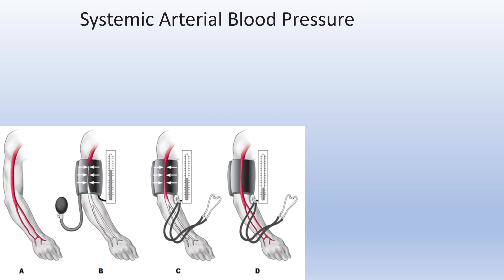When we take blood pressure at the brachial artery with the cuff on the arm, we are only taking the pressure of the systemic circuit, not the pulmonary, and we're only taking pressure of an artery and not veins.